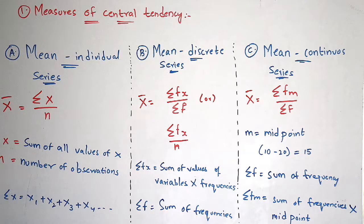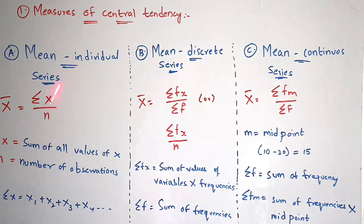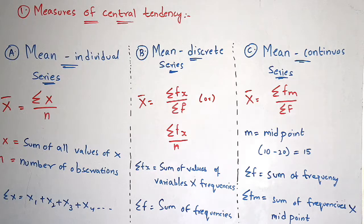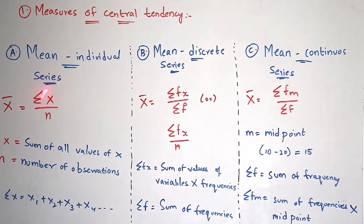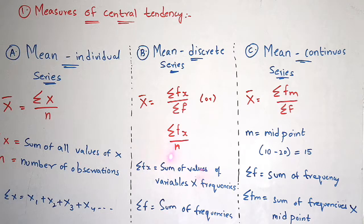I will explain how to apply this formula in my next video. Here Σx is the sum of all values of x — you add all the x values given in the data — and n is the number of observations. For example, Σx = x1 + x2 + x3 + x4. Coming to mean discrete series, the formula is: x̄ = Σfx / Σf, or alternatively Σfx / n.